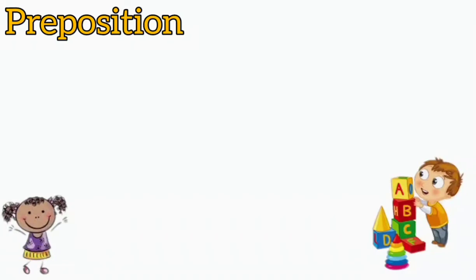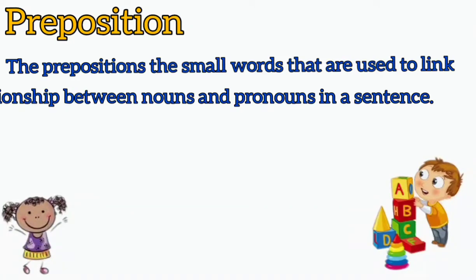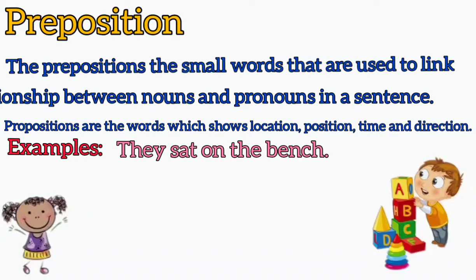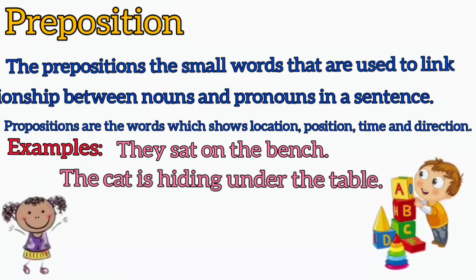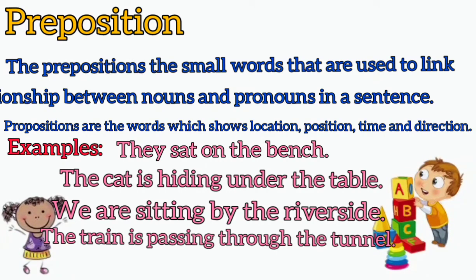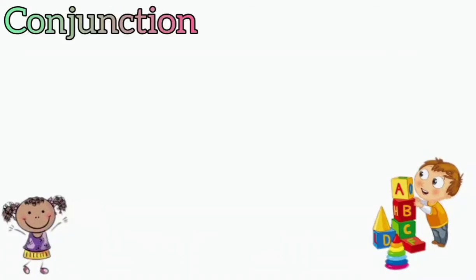Next we have prepositions. Prepositions are small words used to link or show relationship between nouns and pronouns in a sentence. They show location, position, time, and direction. For example: 'They sat on the bench.' Here 'on' is the preposition. 'The cat is hiding under the table.' Here 'under' is the preposition. 'We are sitting by the riverside.' Here 'by' is the preposition. 'The train is passing through the tunnel.' Here 'through' is the preposition.